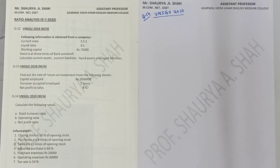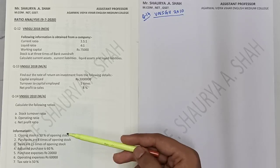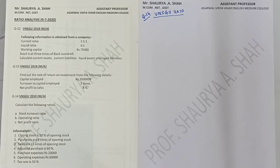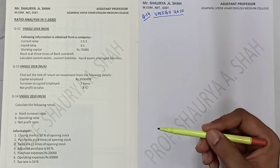The formula for stock turnover ratio is cost of goods sold upon average stock. Operating ratio formula is cost of goods sold plus operating expenses upon sales. Net profit ratio is net profit upon sales into 100. These three things we need to find out, and for that you have been given seven particulars.